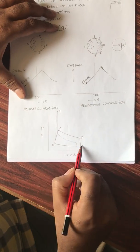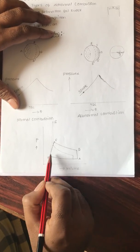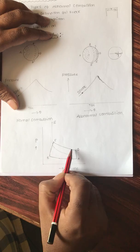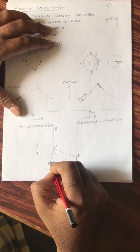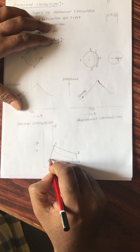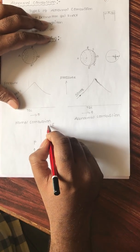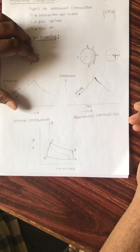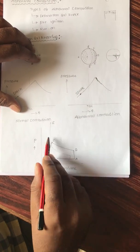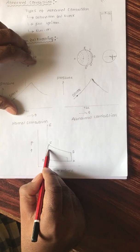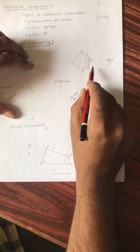On the pressure-volume diagram, in normal combustion after compression, heat addition takes the cycle to point C, followed by expansion. But in abnormal combustion, the pressure and temperature are very high, creating a detonating wave. These waves collide and create roughness, reducing power output — expansion occurs earlier than expected, resulting in power loss due to knocking.